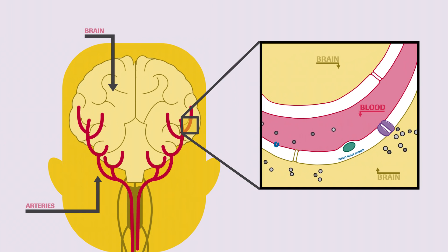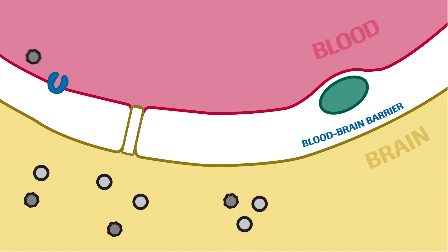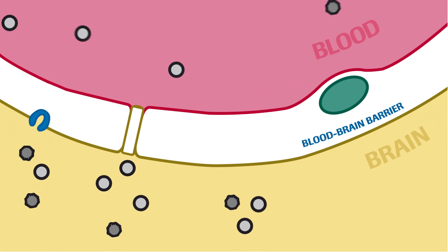The first stage is a tightly packed layer of cells called the blood-brain barrier. It acts as a kind of guard to the brain, selectively allowing some molecules into the brain but stopping others from entering.